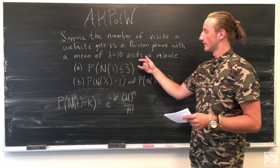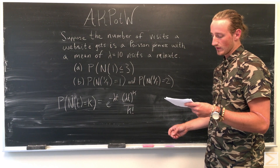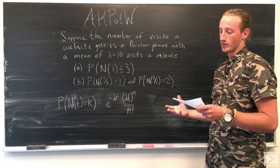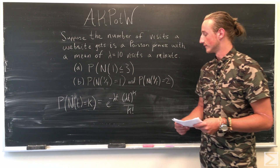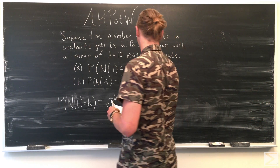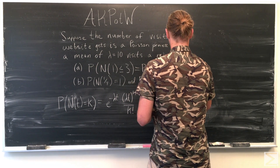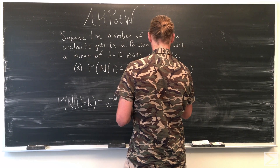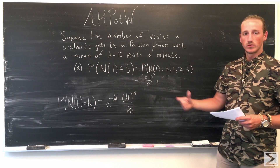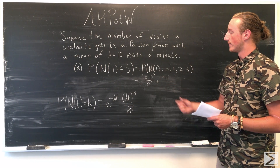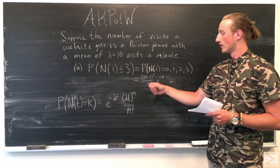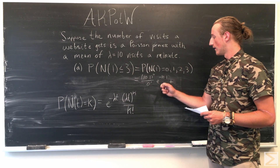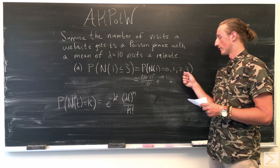For Part A, to find the probability that there are less than three calls in the first minute, we're going to look at the probability that there are zero, one, two, and three calls, because it's less than or equal to three. We can write that out and start plugging in: k equals zero, one, two, and three. We know our lambda is 10, which is the mean number of visits, and we're going to sum up all these probabilities.